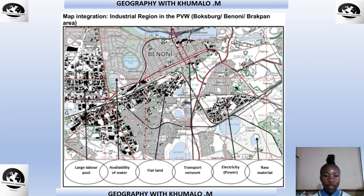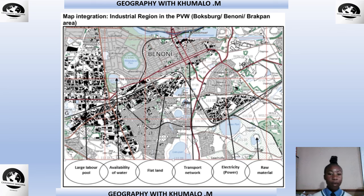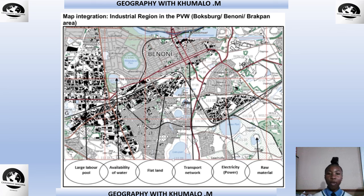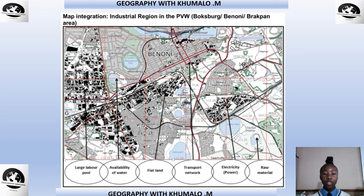Some companies reinvest in communities by providing bursaries for development. Looking at the map integration of the industrial region in the PWV — Boksburg, Benoni, and Brakpan area — the map indicates the large labor pool, availability of water, flat land, transport network, electricity, and raw materials. Each logo on the map represents one of these key factors.